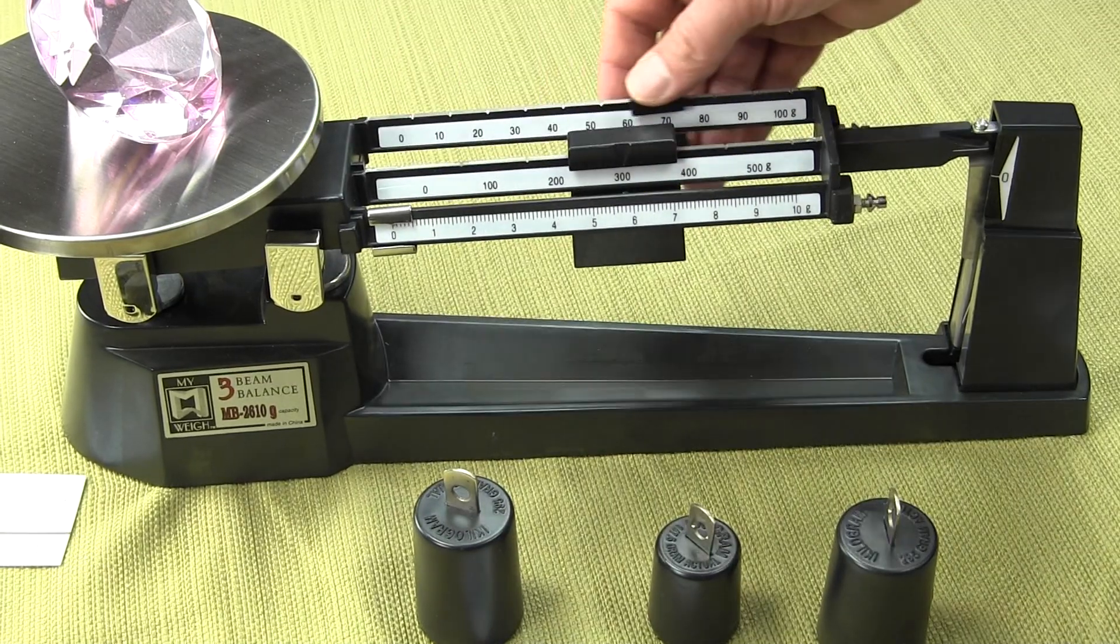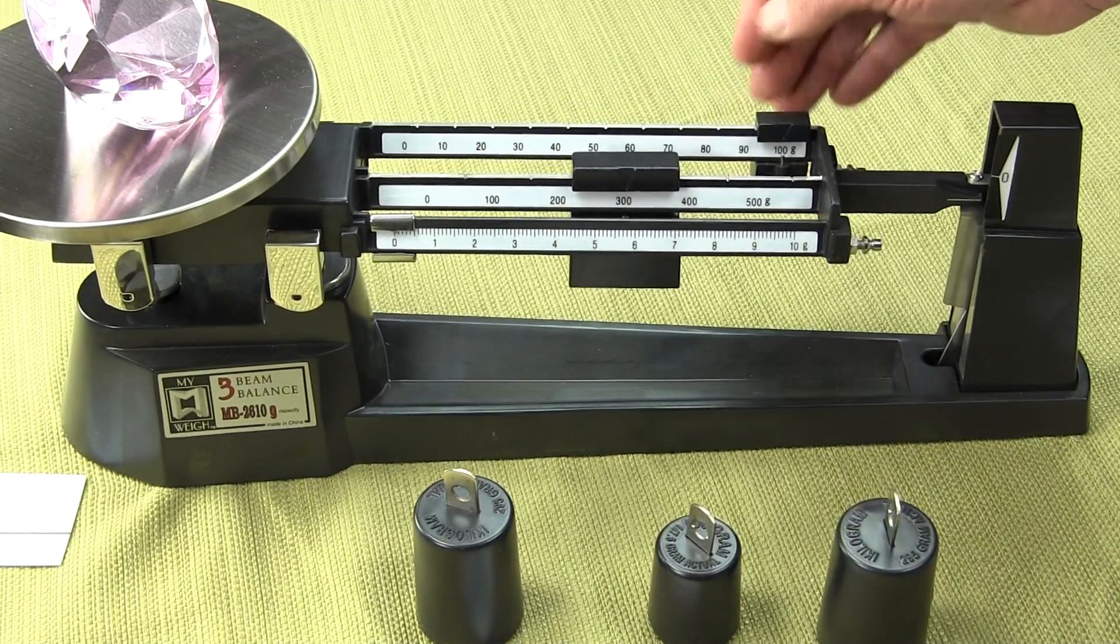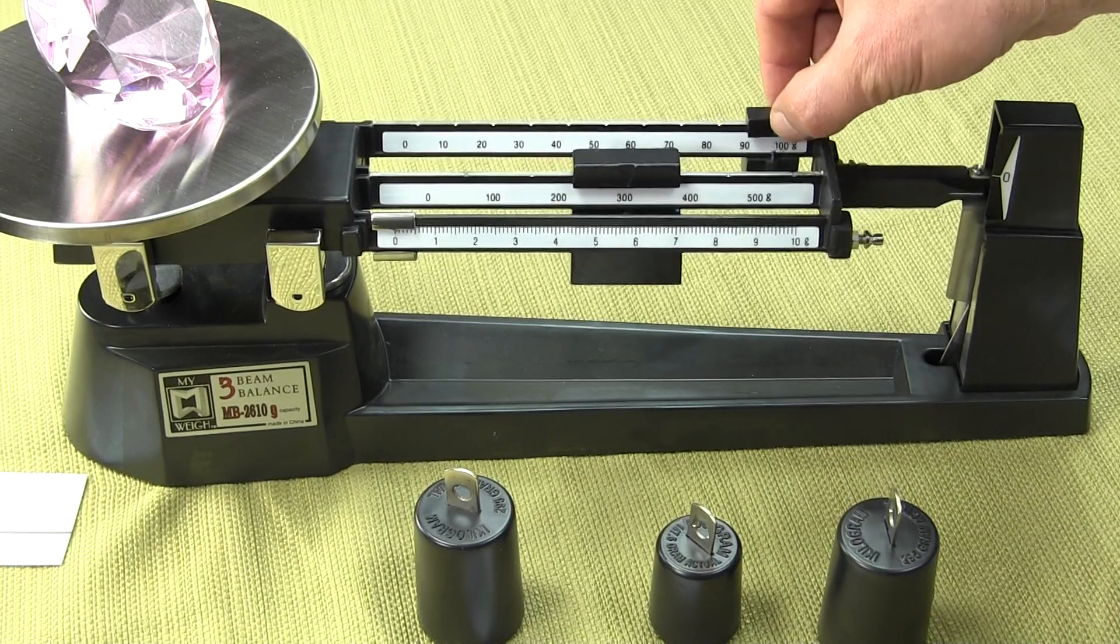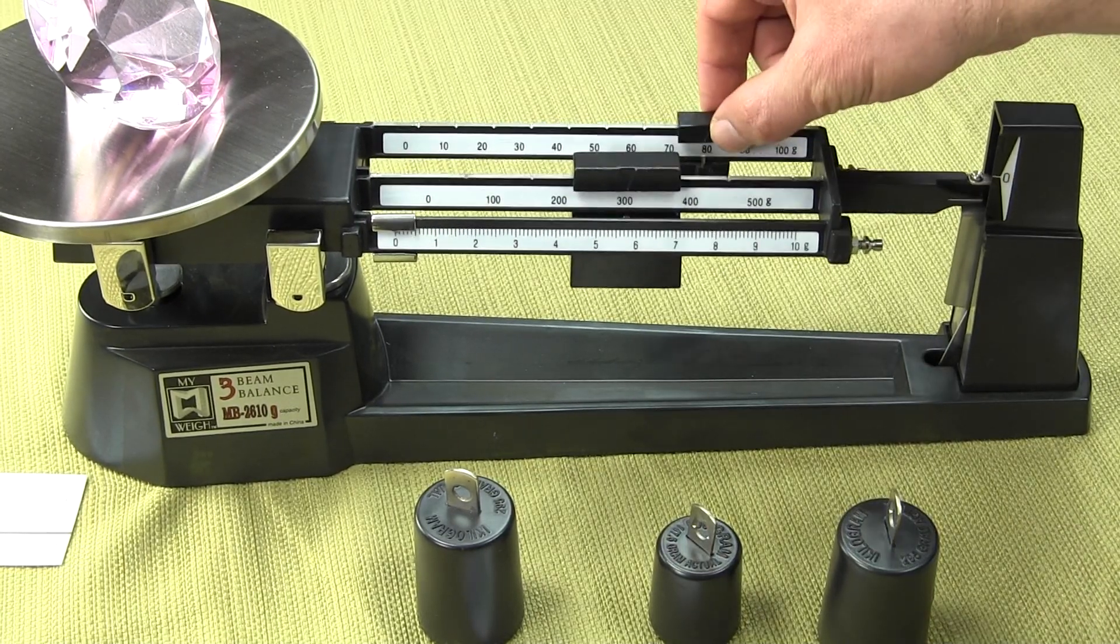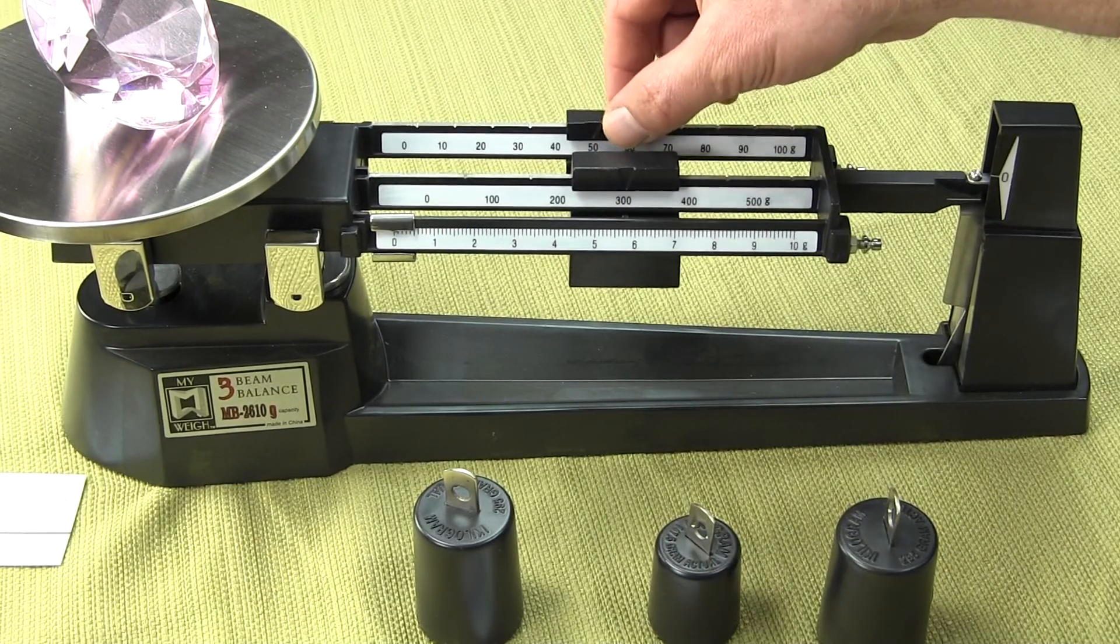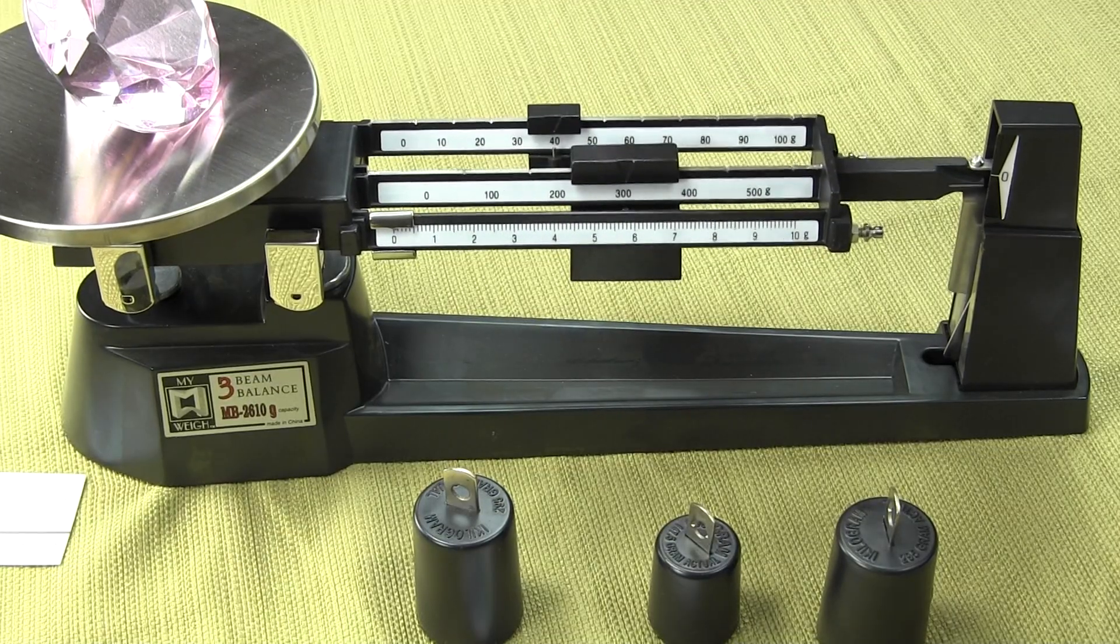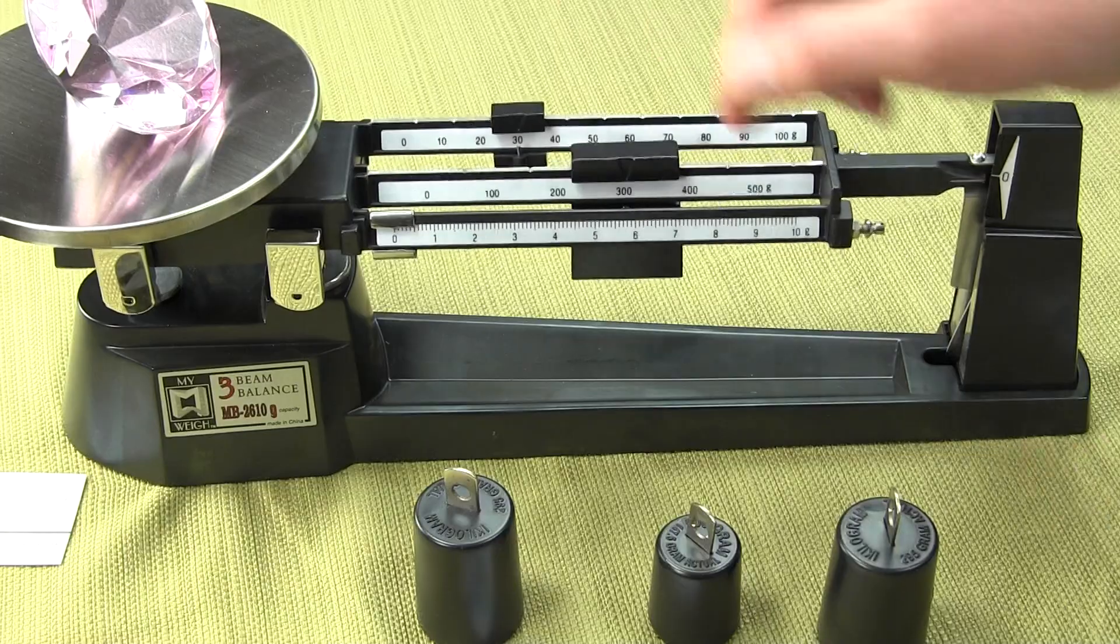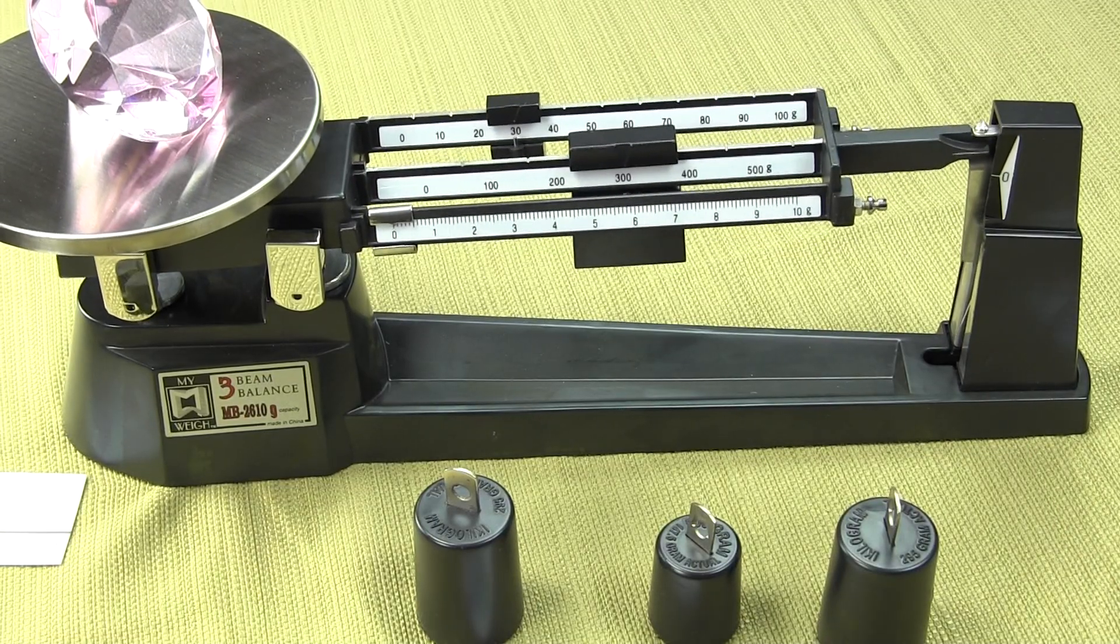Now we want to go to the beam all the way to the rear. We put it to 100, the beam is down, it's too heavy. Now we start sliding it back until the beam goes up. At 40, it's too much. So at 30, now the beam is up.